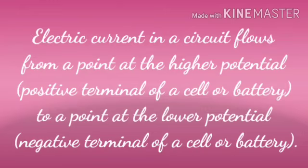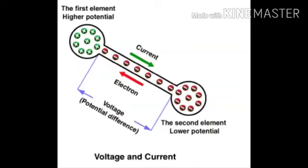Electric current in a circuit flows from a point at higher potential, means positive terminal of a cell or a battery, to a point at the lower potential, means negative terminal of a cell or battery.